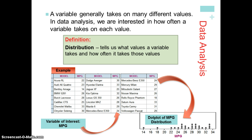If we took the variable of interest — miles per gallon — and wanted to graph it in a distribution, we would line them up numerically across the bottom and count up how many of each miles per gallon value. All the way on the left we would have the lowest value, all the way on the right the highest value, and then we would stack dots to represent the count of how many models had that value. That distribution is of interest to us, and we can gain intelligence from looking at it.